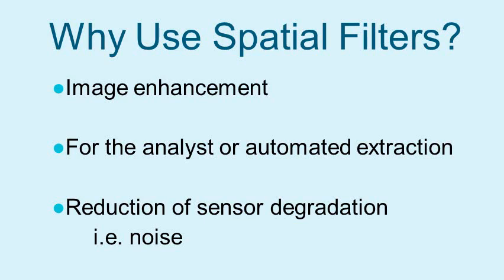Many times, remote sensing analysts want to extract more information from the images they're working with, through some type of image enhancement. Spatial filters are just one way images can be manipulated to extract more information. Filters work because they either suppress or enhance the brightness values of the original image. According to Nicholas Faust, there are three primary reasons filters are used: to improve the image for further analysis, to improve the image for automated feature extraction, or to remove or reduce satellite sensor degradation, or noise.